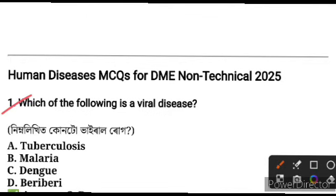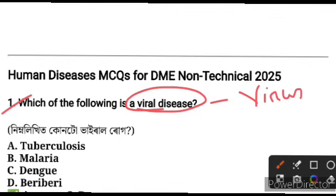Question number one: which of the following is a viral disease? Viral disease means virus is more likely. Tuberculosis means bacteria is more likely.